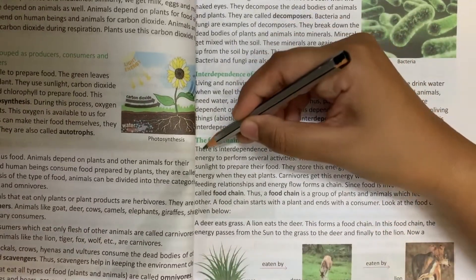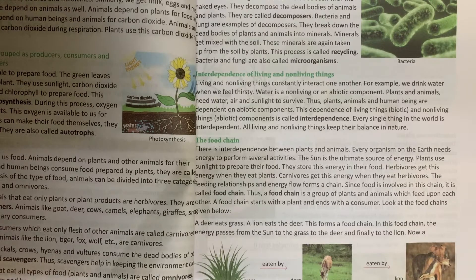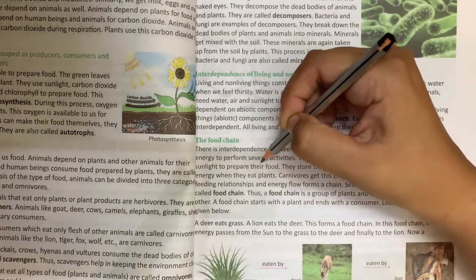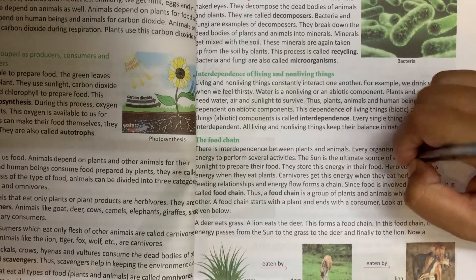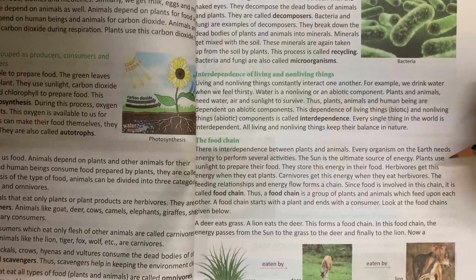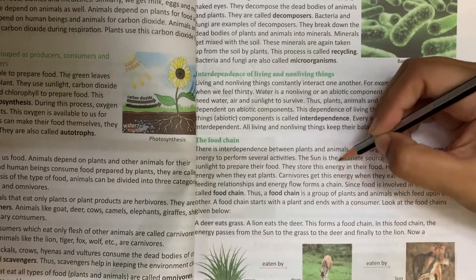Repeat after me: there is interdependence between plants and animals. Plants and animals depend on each other. Every organism on the earth needs energy to perform several activities. In the earth there are many organisms. The sun is the ultimate source of energy. Plants use sunlight to prepare their food, and they store this energy in their food.